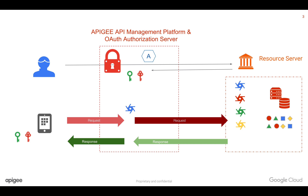Grant type is nothing but how the access token is getting generated and how the client application gets access to the access token before sending it to get back the response in the API call. Primarily there are 4 grant types, and the grant type is decided based on whether the resource owner is involved or not and what kind of client application is trying to access these APIs.